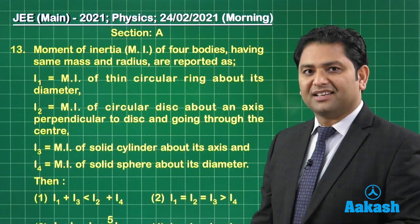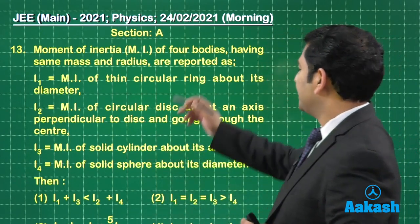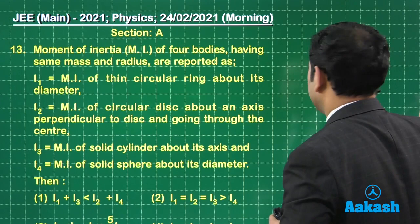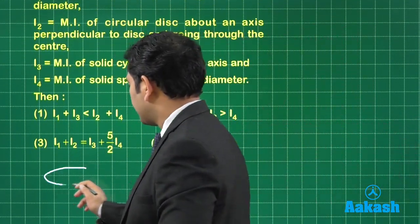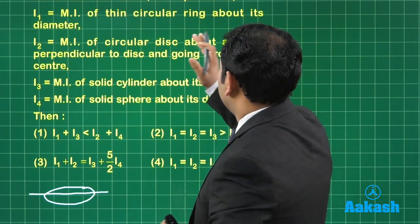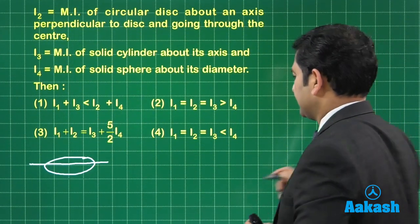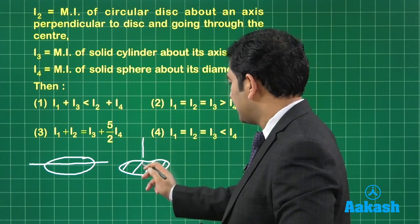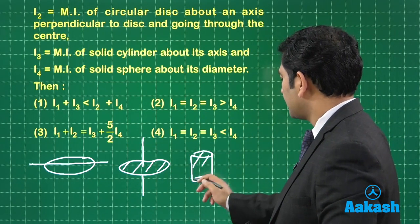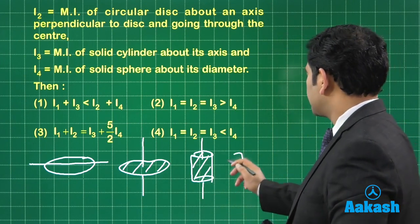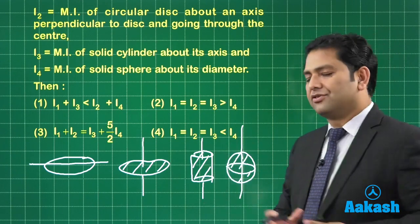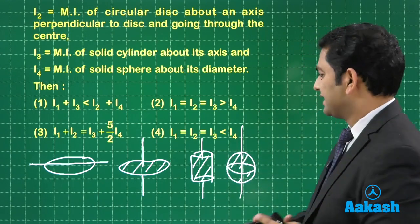Let's go for the next. Question number 13. Question number 13 is about the moment of inertia. Moment of inertia of four bodies having same mass and radius. The first one is thin ring about its diameter. So I1 is thin ring. Let me make a ring here and about the diameter. That's the first one. What about I2? I2, circular disk about an axis perpendicular to the disk. That is fine. So this is the disk. And the axis here is this. What about I3? Cool. Solid cylinder. Right. So this is the axis. And what about I4? Solid sphere. Okay. I'll just give it a three dimensional view and about this. So I1, I2, I3, I4. And if you see clearly it has been said all have the same mass and radius.